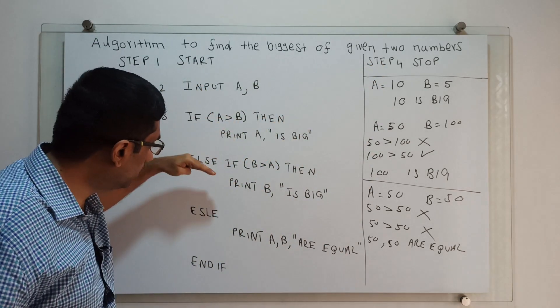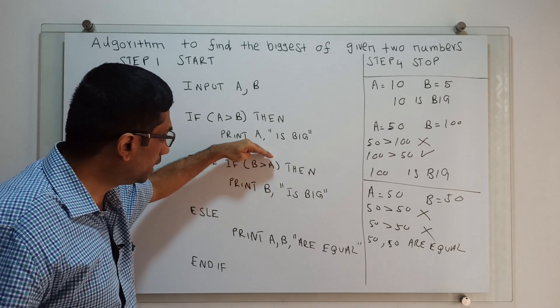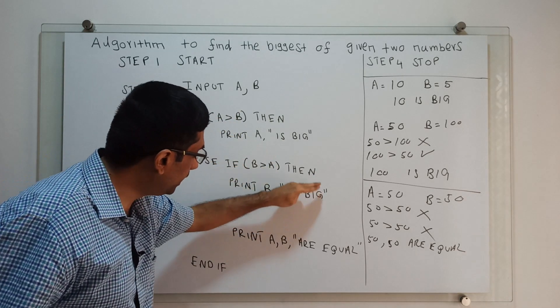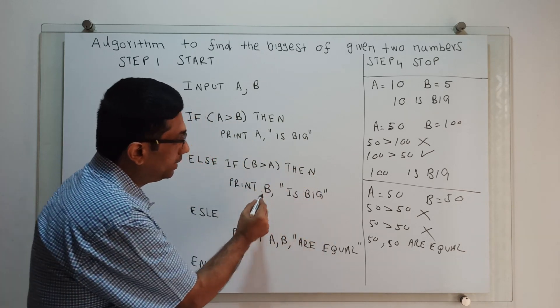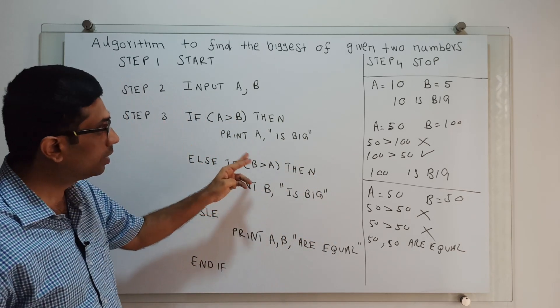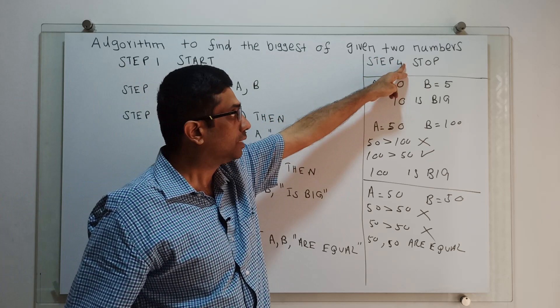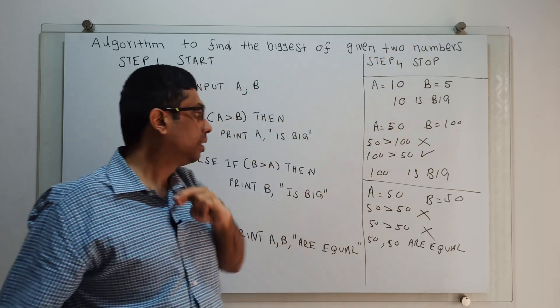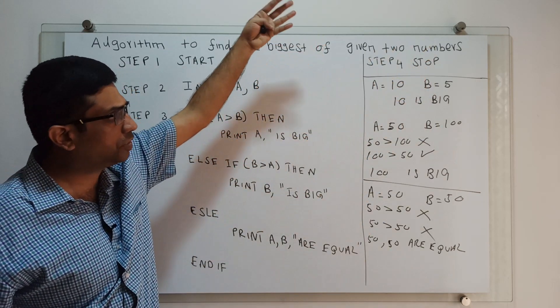then it will come to the else-if block. It will check this condition. If the condition is true, the statement inside the else-if block will get executed. After execution, the control will transfer to the next statement, that is the end of this algorithm: stop.